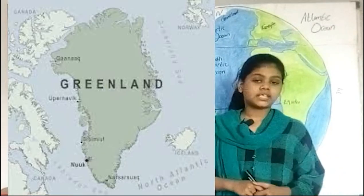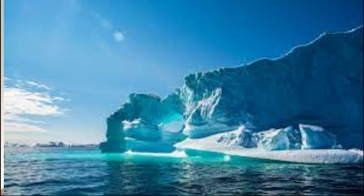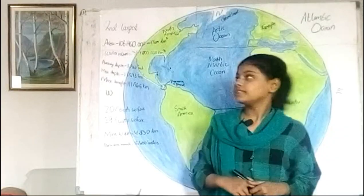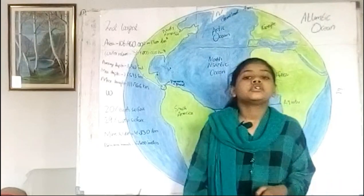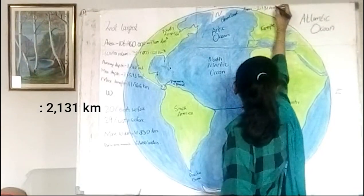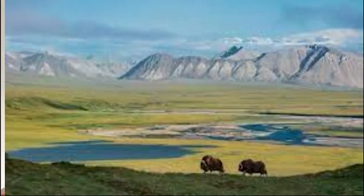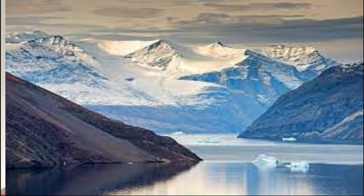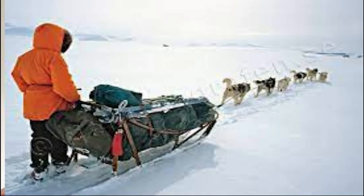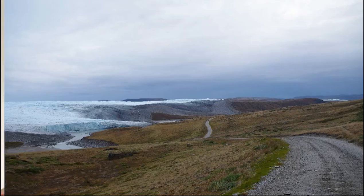Greenland is the largest island in the world. The island is the territory of Denmark. It is more than three times the size of the state of Texas. The name Greenland means land of people. Its area is 2,131 square kilometers. Greenland has the lowest population density and is home to the largest natural park in the world. 80% of Greenland is covered in ice, snow, and glaciers. The road system in Greenland is extremely limited.